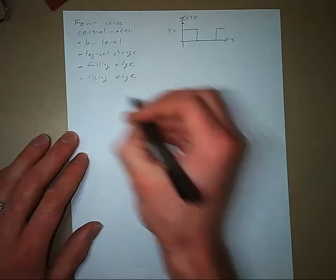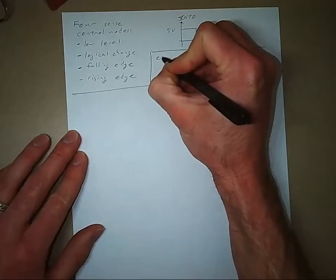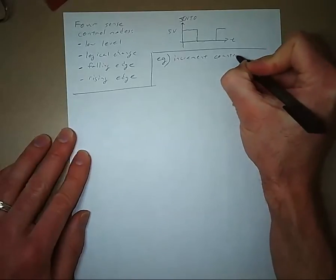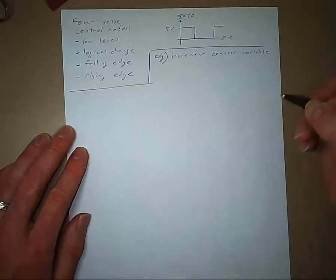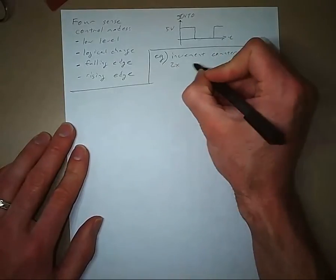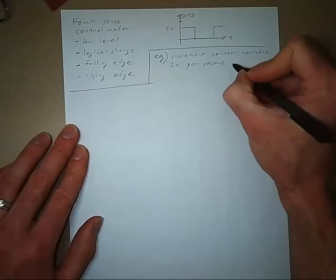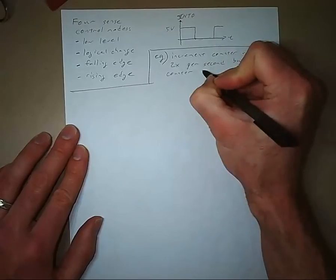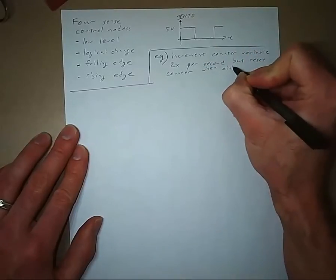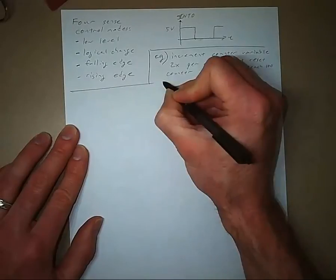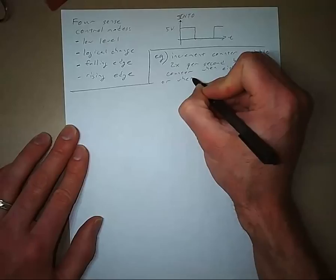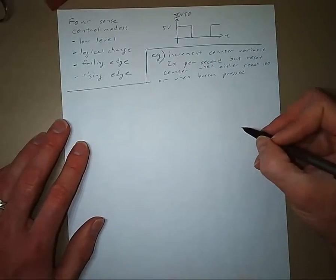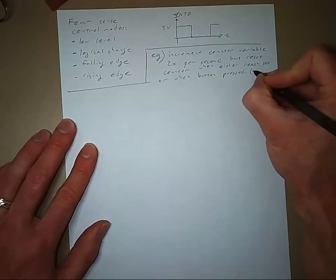So here for our example, we want to increment a counter, a counter variable. We're not really doing anything with it. We're just making some variable go up two times every second. But we want to reset the counter when either reach 100 or when a button is pressed.